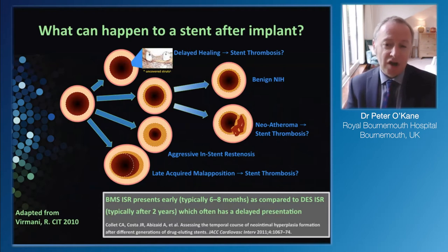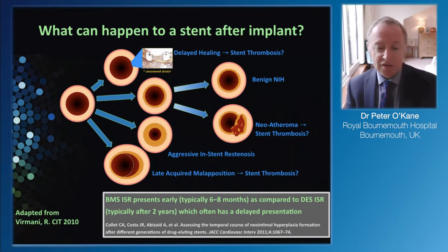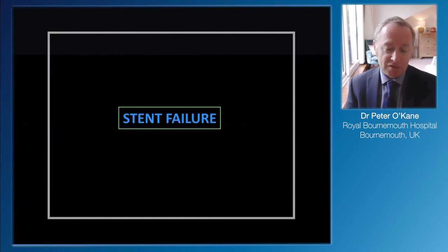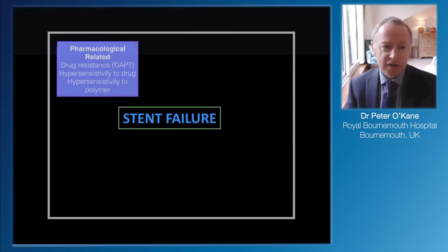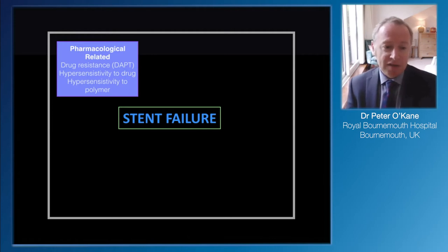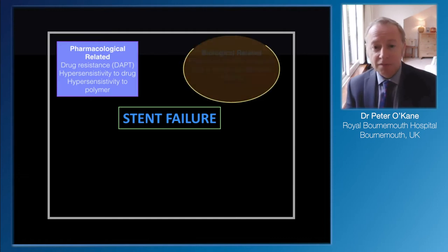There are many factors involved and each patient is different. First, there are pharmacological-related factors: some patients have allergy or intolerance to drugs such as aspirin, clopidogrel, or ticagrelor, or have inherent resistance. They may be hypersensitive to the drug on the stent, hypersensitive to the polymer, and in some cases to the metal itself - i.e. nickel. There are biological factors present which we don't measure.